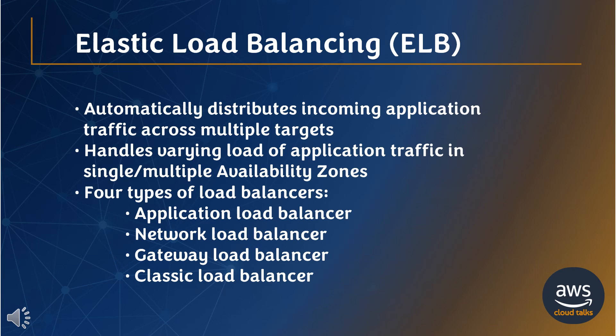Amazon Elastic Load Balancing, ELB, automatically distributes incoming application traffic across multiple targets, such as Amazon EC2 instances, containers, and IP addresses. It handles the varying load of your application traffic in a single availability zone or across multiple availability zones. Amazon ELB offers four types of load balancers that all feature high availability, automatic scaling, and robust security necessary to make your applications fault-tolerant.